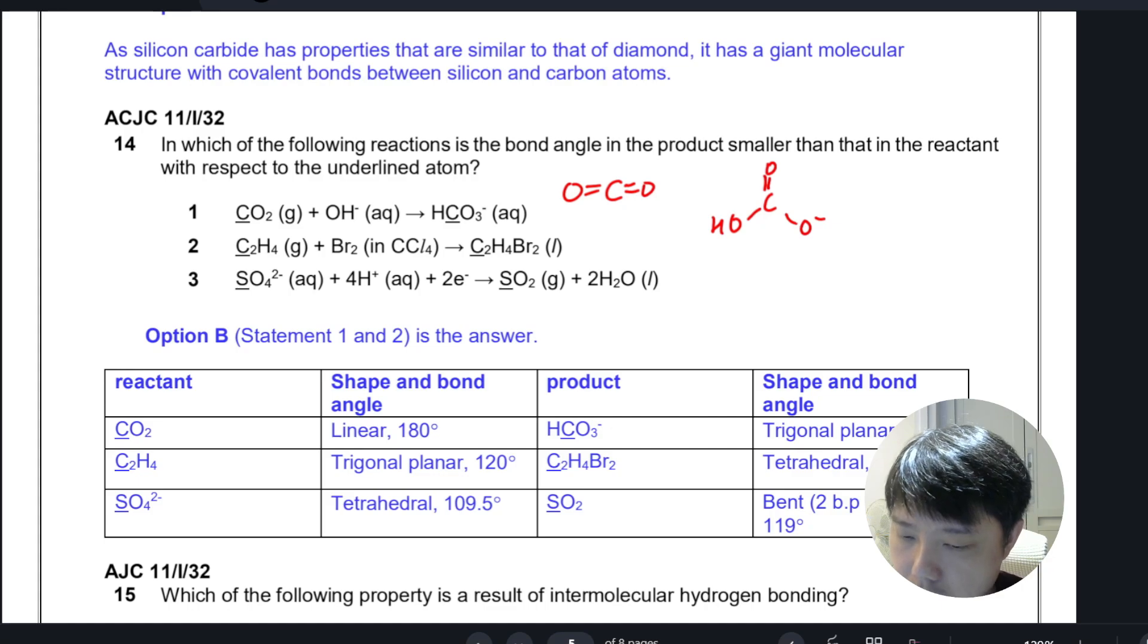For the second reaction, you have trigonal planar at 120 degrees, and then after the addition it becomes tetrahedral. Pretty straightforward.